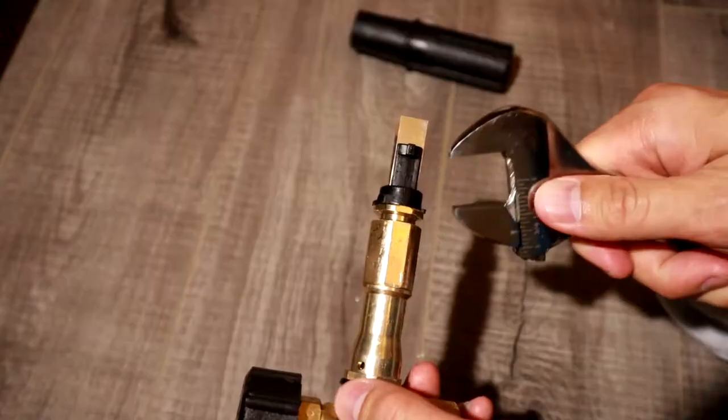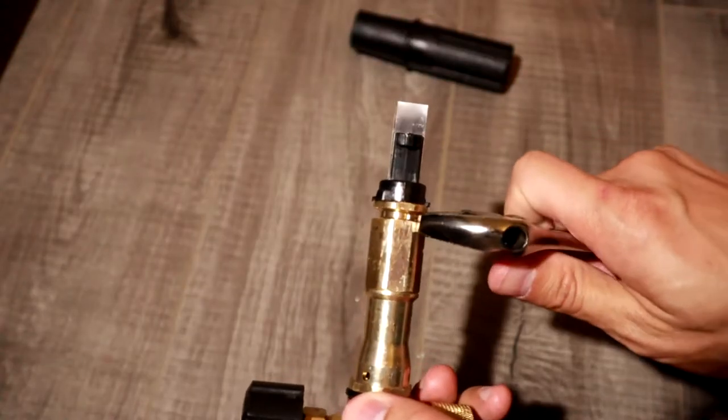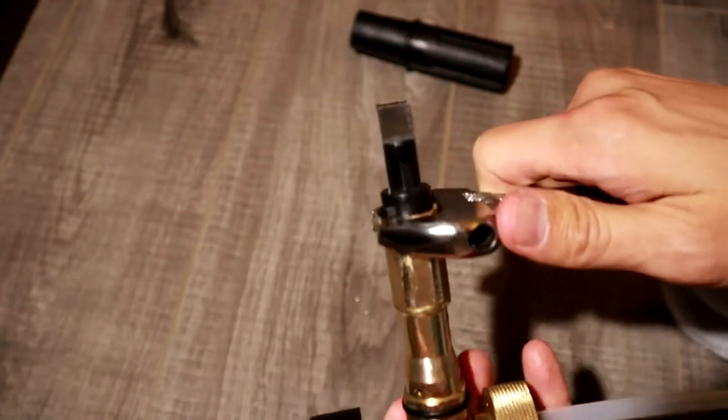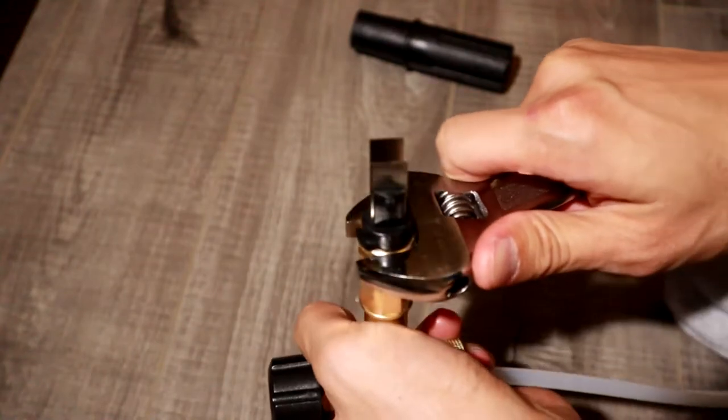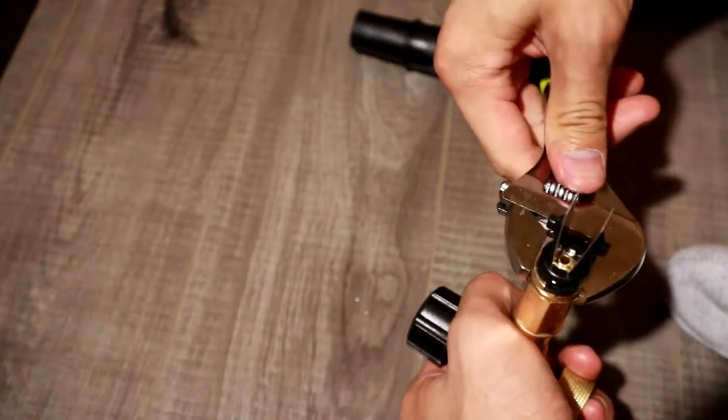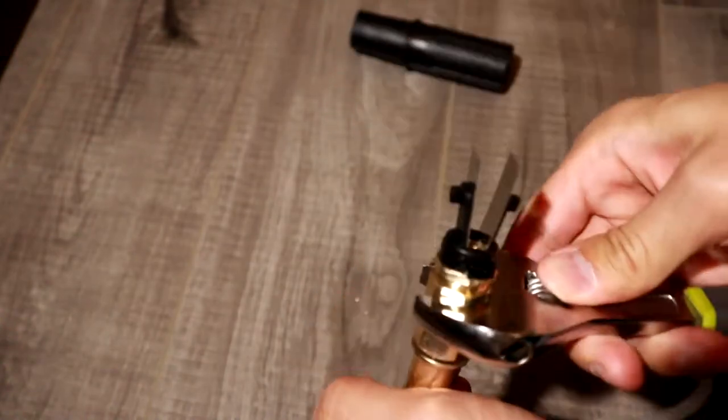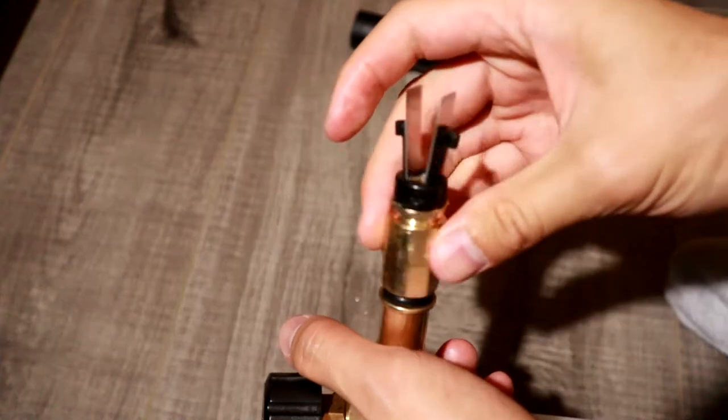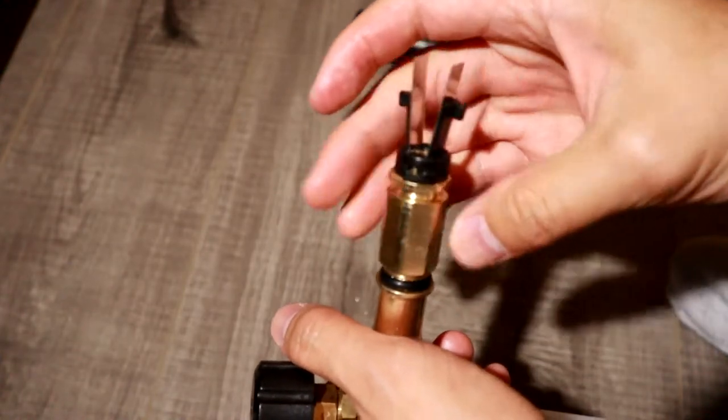Then take your crescent wrench and loosen this front piece here. You can do it right here or on the actual long part for my particular foam cannon. Go ahead and crack that open and your mesh filter will be inside. Once you unscrew that, you'll be able to see the mesh filter.